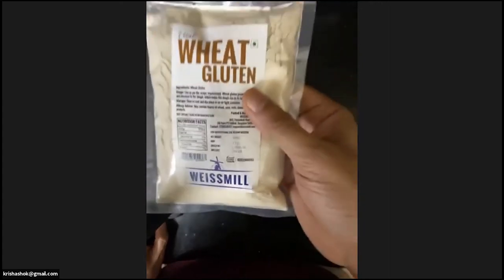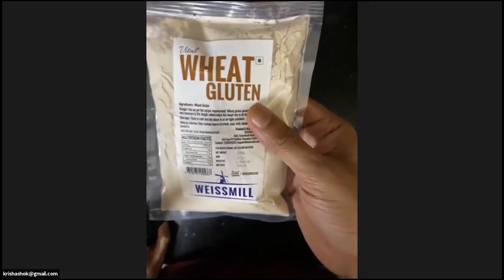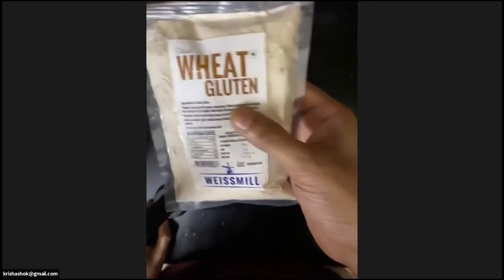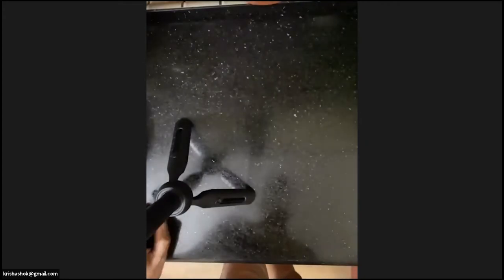Vital wheat gluten really is a game changer. This costs about 170 rupees and you'll never run out of it. Store it in the freezer.